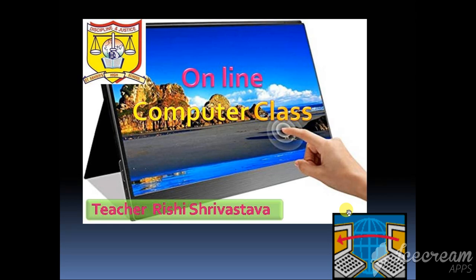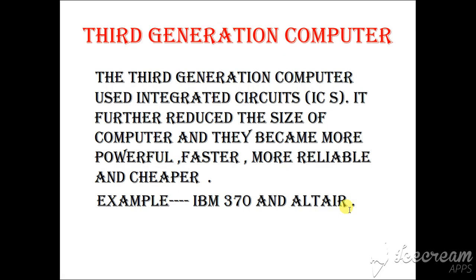Good morning students. Online computer class, teacher is Sri Srivastava, class fifth. Third generation computers used integrated circuits — ICs. The full form of ICs is 'integrated circuit.' They further reduced the size of computers, and computers became more powerful, faster, more reliable, and cheaper. Examples include the IBM 370 and Altair.